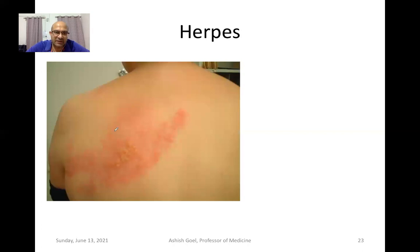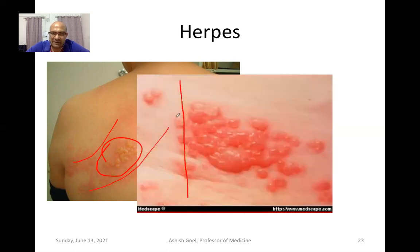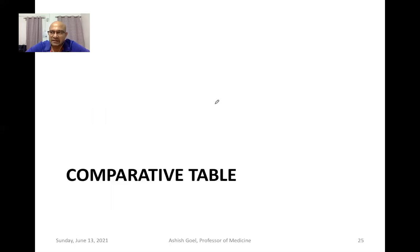This is a picture of herpes zoster infection showing vesicular lesions which never cross the midline, with a strong dermatomal distribution causing burning pain. There are also chronic but treatable causes of chest pain including gastroesophageal reflux disease, peptic ulcer disease, gallbladder colic, arthritis, cervical disc disease, costochondritis, musculoskeletal pain, and anxiety neurosis. The idea is to differentiate all these categories, place the pain into one, and act accordingly.